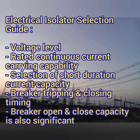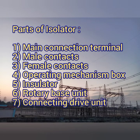Selection of an isolator depends on the voltage level of the system, the rated continuous current carrying capacity, short duration current capacity, breaking and closing timings, and breaker opening and closing capacities. The main parts of an isolator include the main connection terminals, moving and fixed contacts (male and female contacts), operating mechanism box for motorized operation, insulators to support the isolator, a rotary base, and connecting drive shafts.